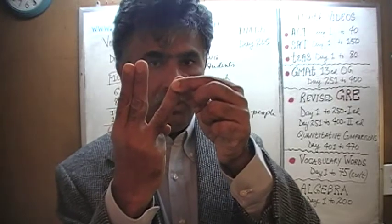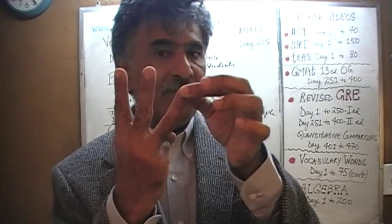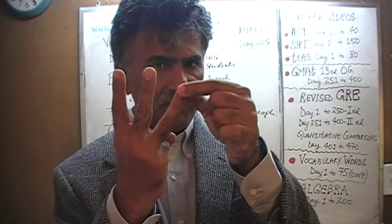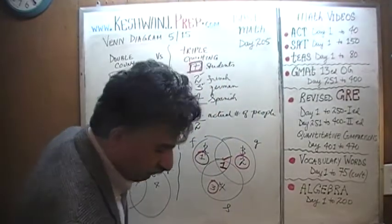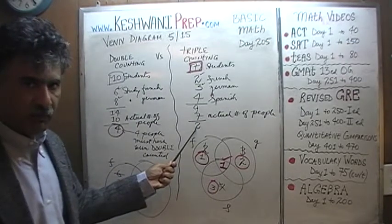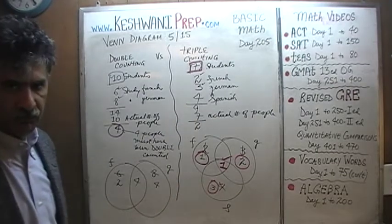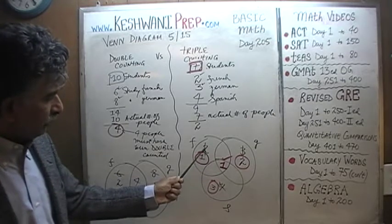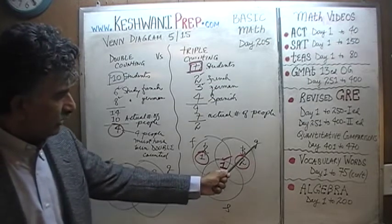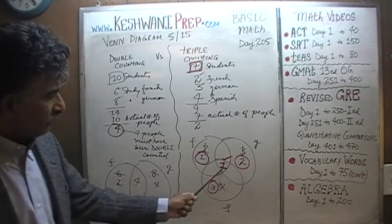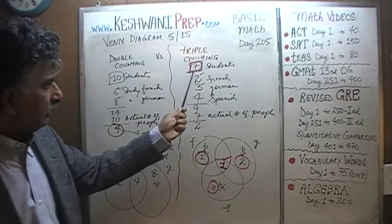We have an overflow of 2 because we had 1 person whom we are counting as 3 people — we are triple counting this 1 person. Since that 1 person appears as 3 people, we have an overflow of 2. That tells us there must have been 1 person who studies all 3 languages. As soon as we put 1 in the common area, we go back and adjust: 2 becomes 1, 3 becomes 2, and 4 becomes 3. Now 1 plus 2 plus 3 plus 1 equals 7 — exactly what we have.